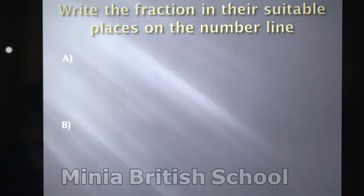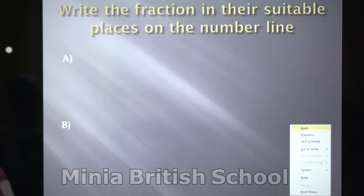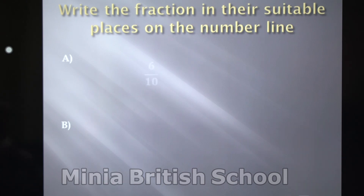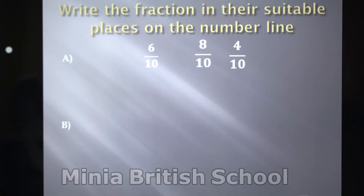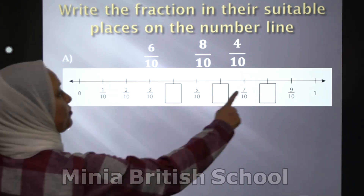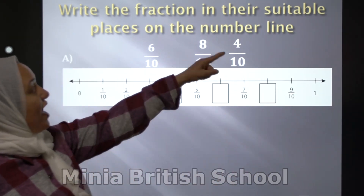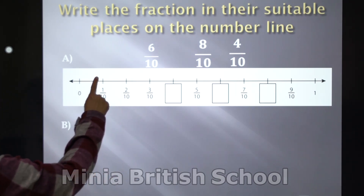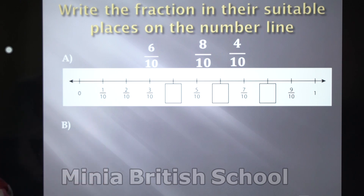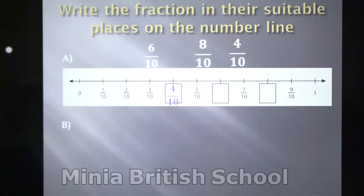Write the fraction in its correct place on the number line. What is the meaning of the number line? Here you have 6 over 10, 8 over 10, and 4 over 10. This is the number line — it starts from 0 and ends at 1. You have fractions: the first is 1 over 10, after that 2 over 10, after that 3 over 10. Who can complete? Yes: 4 over 10, after that 5 over 10, 6 over 10, and the last is 10 over 10.